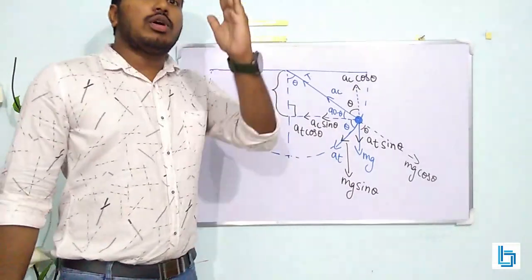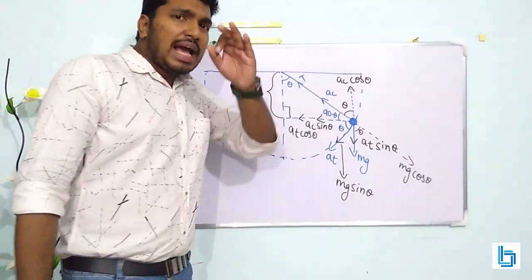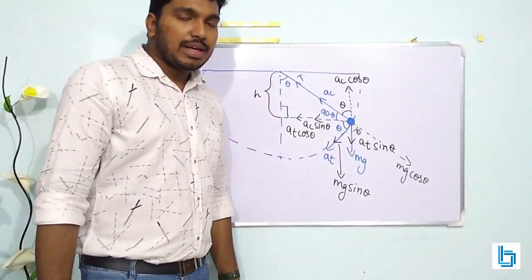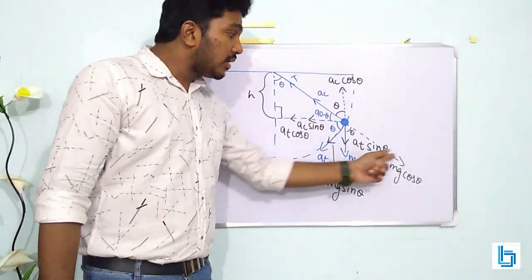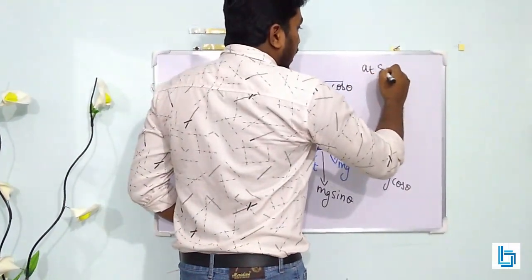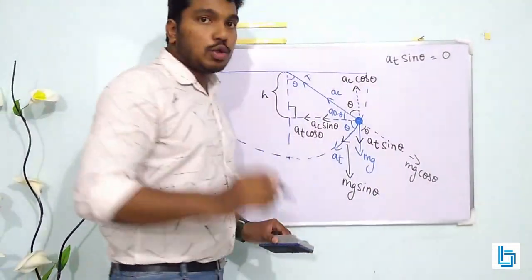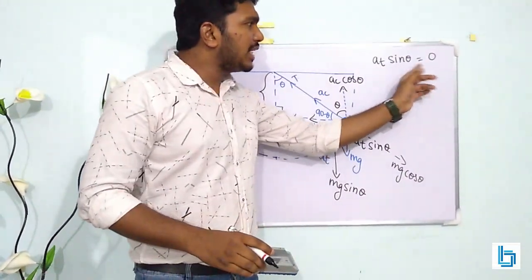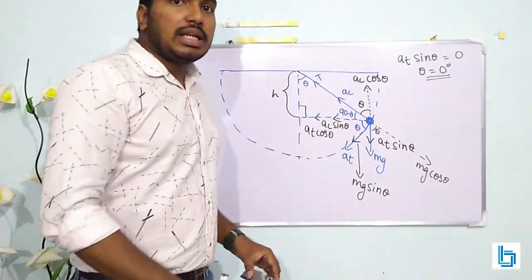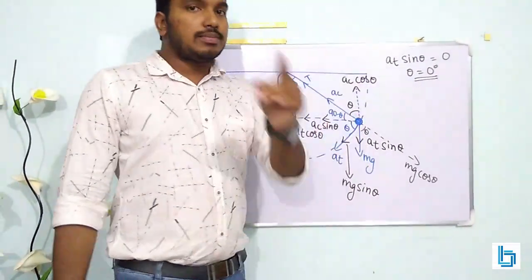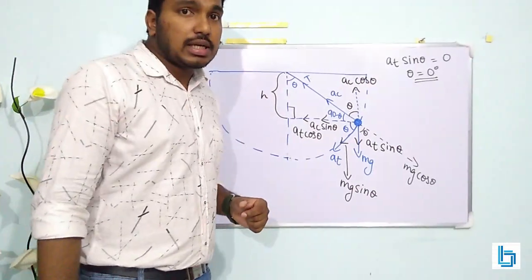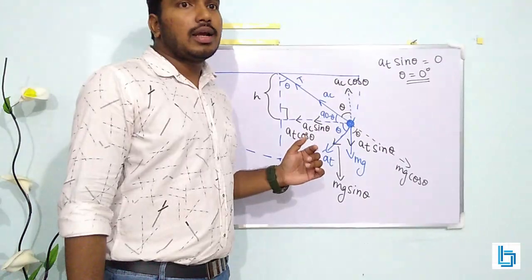For the first case, if the acceleration is directed vertically upwards, there should only be a vertical acceleration in the upward direction, which means the downward component of acceleration must be zero. Therefore, AC sin theta should equal zero, which means theta must equal zero degrees. So when theta equals zero degrees, the acceleration is directed vertically upwards.